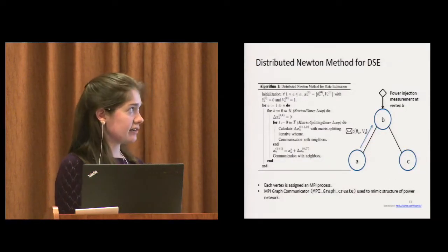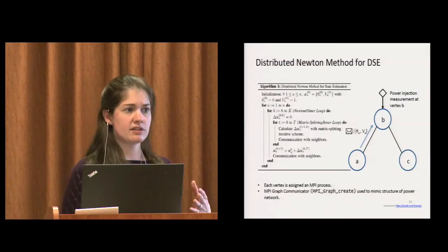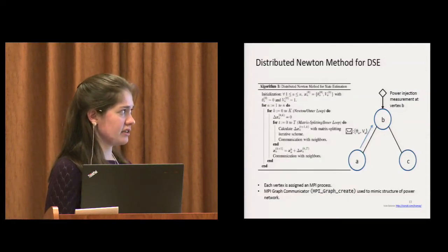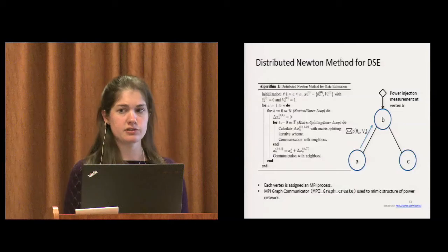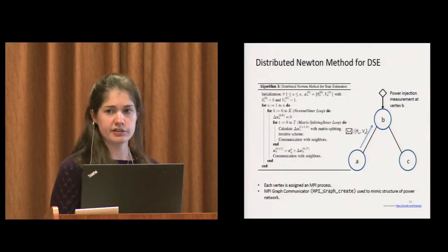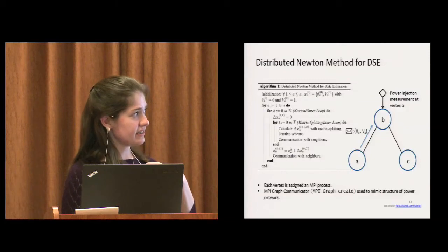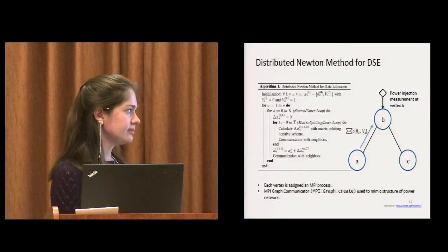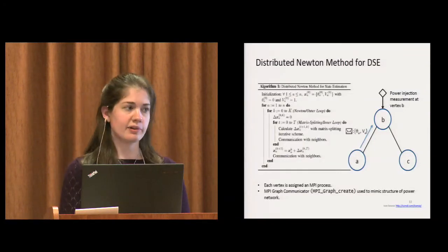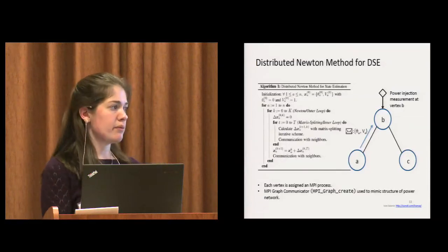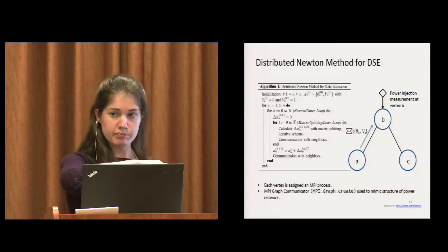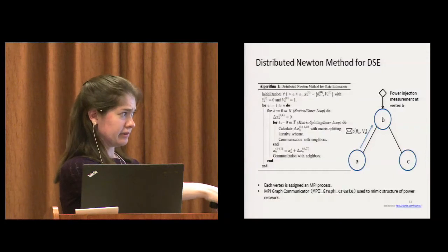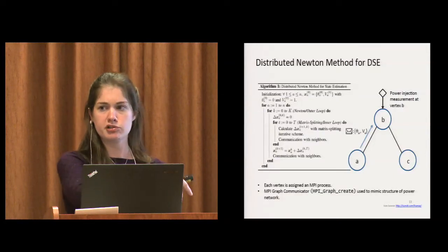Here's pseudocode for our algorithm. You recall we're using Newton's method to minimize the objective function. When we're solving for the update for the next Newton iterate, instead of doing a direct linear solve, we do the matrix splitting iterative scheme. There is a nested inner loop of iterations within each Newton outer loop. Every vertex in the power network gets assigned an MPI process. We only allow communication to occur between neighboring vertices. We use the MPI graph communicator, which allows us to use a communicator with the exact same structure as the underlying power network.